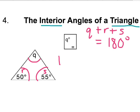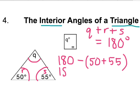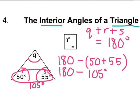We're taking 180 degrees, which is the total, and subtracting 50 plus 55. So 180 take away 105 degrees, because the sum of these two angles is 105 degrees. And 180 minus 105 is 75 degrees, so angle Q is 75 degrees.